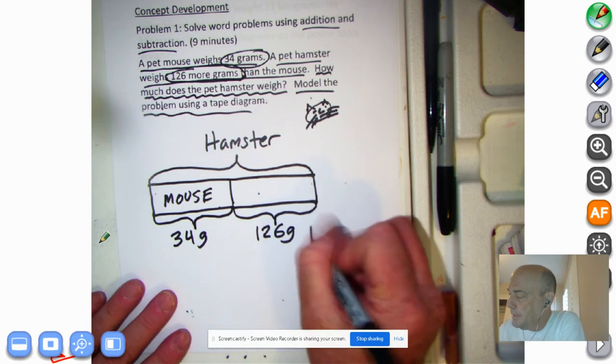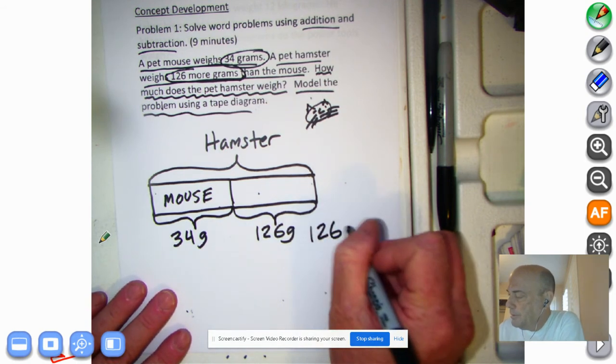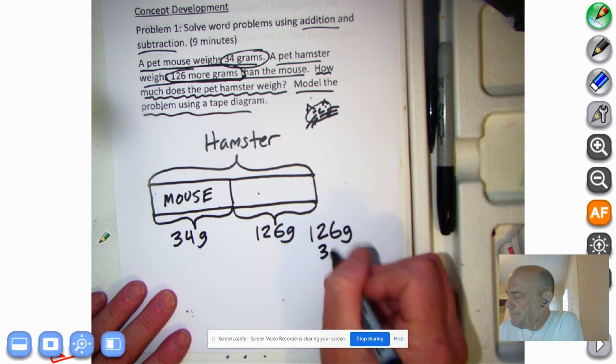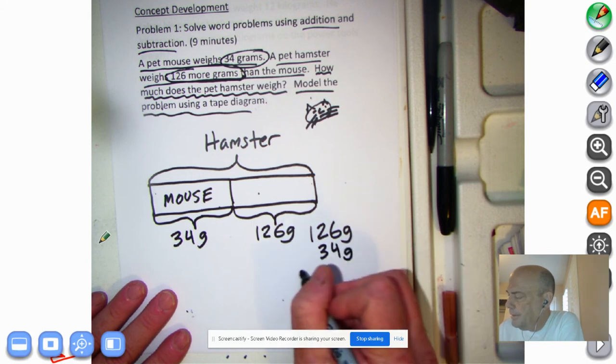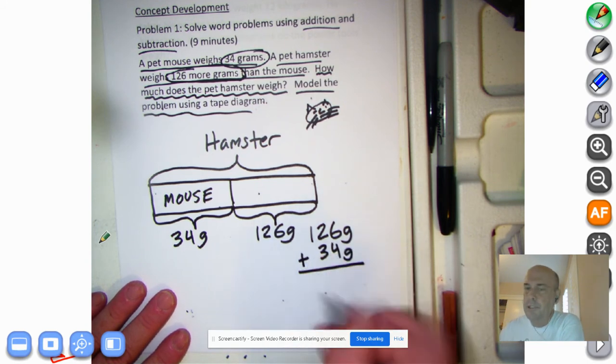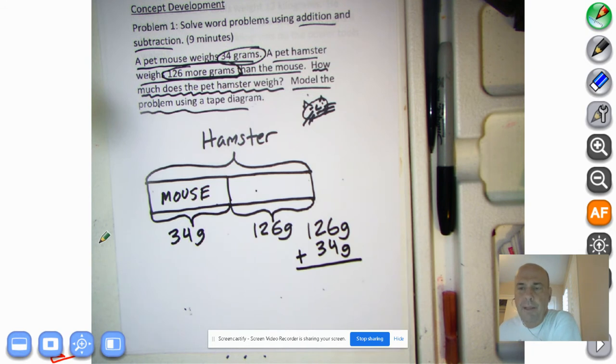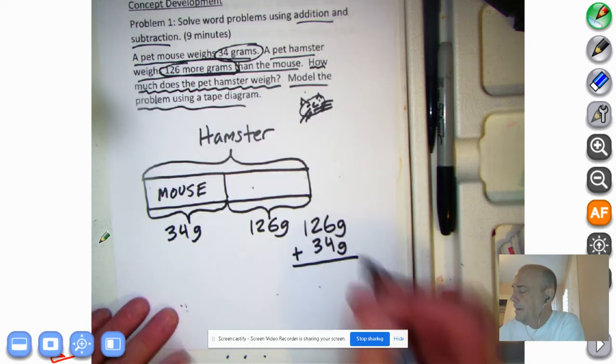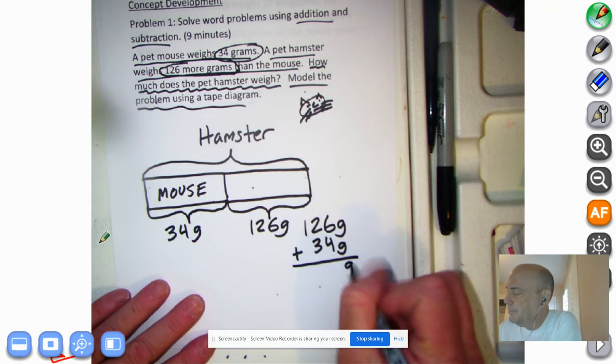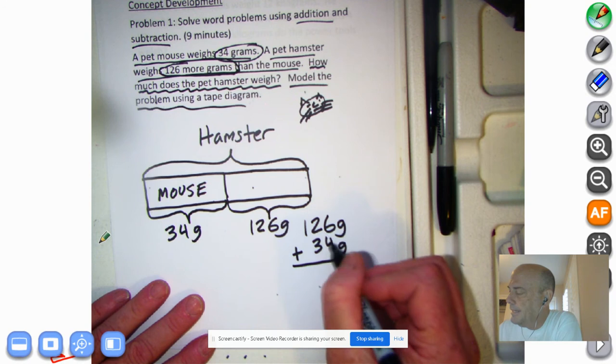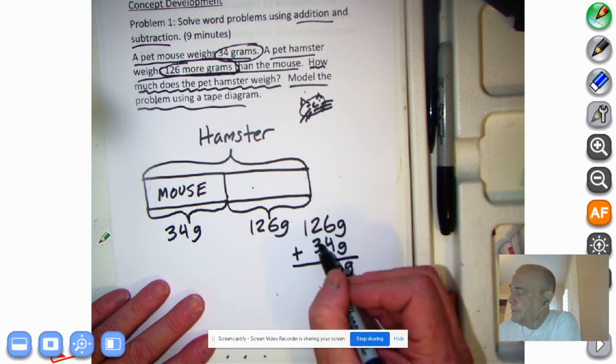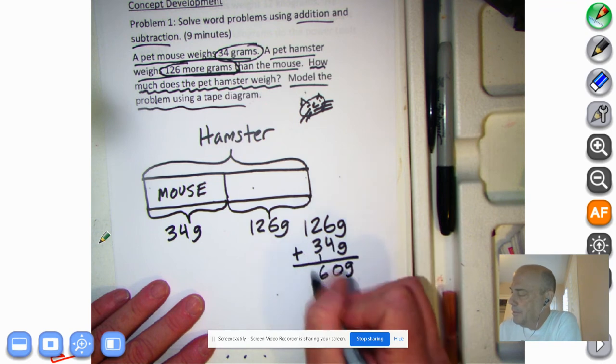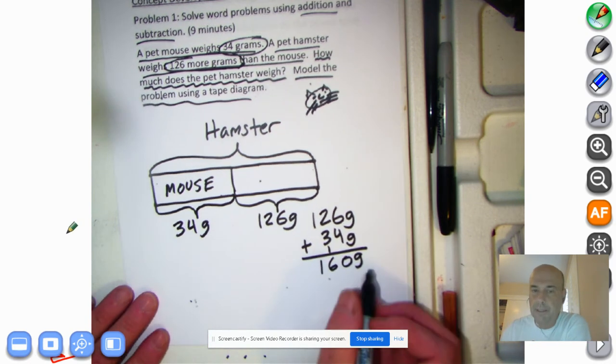So what we're going to do is we're going to say 126 grams plus 34 grams. What I'd like you to do is pause the tape and try to figure that one out on your own and come on back when you're ready. And welcome back. Okay, I'm going to drop down my measurements. Our grams, 6 plus 4, 6, 7, 8, 9, 10. 2 plus 3 is 5, right? Plus 1 is 6. Bring down the 1.